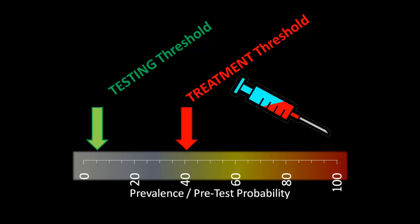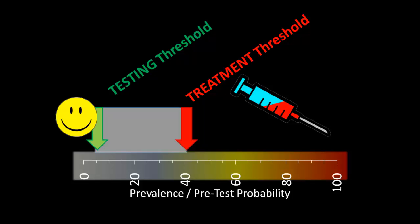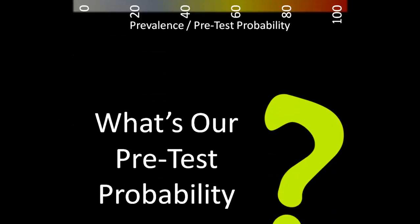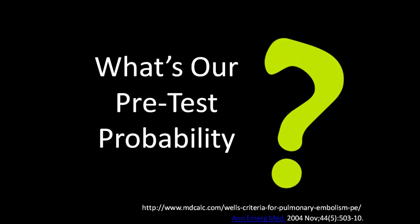We wouldn't want to miss too many people without the disease. And just as before, we have a gray area between the testing and treatment threshold, where we're not sure what we need to do. So we have to figure out what is our pretest probability for Bob — what is the chance that Bob has a pulmonary embolism?